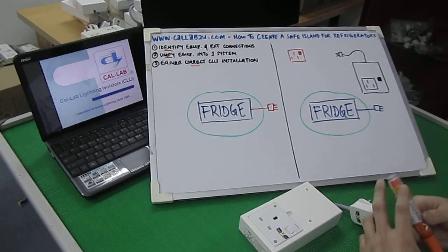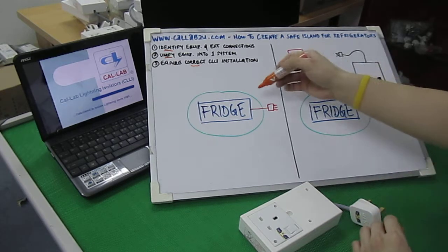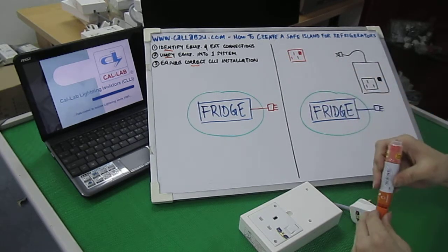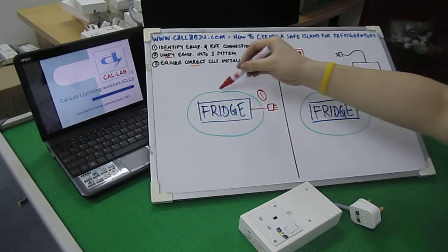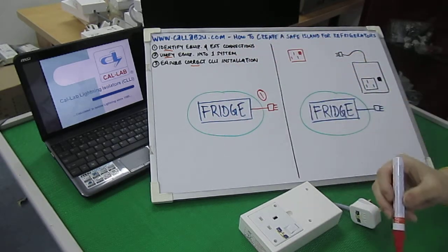Now let's take a look at a typical refrigerator setup. You have the refrigerator which is the equipment you want to protect, as well as the external connections, in this particular case the power supply. Again, we have the imaginary boundary to signify the island, so that's step one.